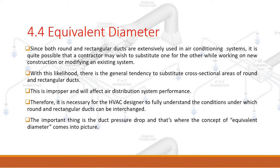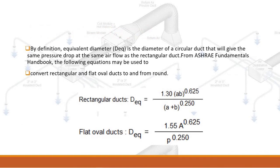The important thing is the duct pressure drop, and that's where the concept of equivalent diameter comes into picture. By definition, equivalent diameter is the diameter of a circular duct that will give the same pressure drop at the same airflow as the rectangular duct. From the ASHRAE Fundamentals Handbook, the following equations may be used to convert rectangular and flat oval ducts to and from round.